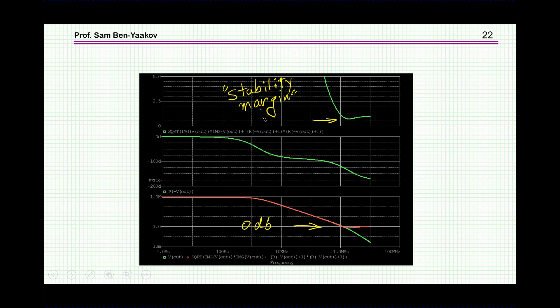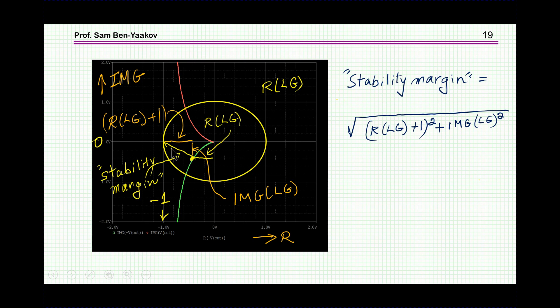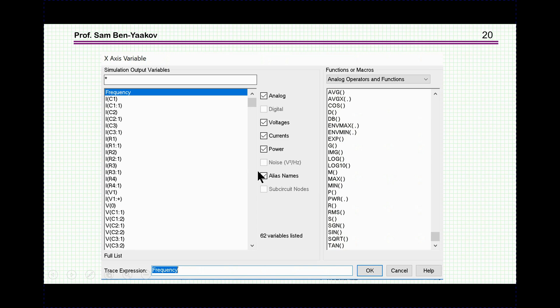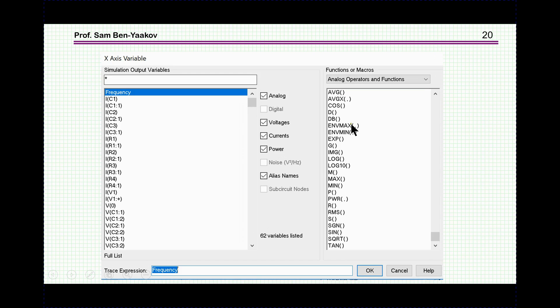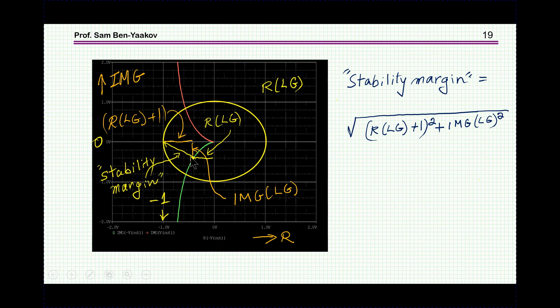So here we have it, this is the original Bode plot, this is the magnitude, this is the phase and this is the stability margin and you see that at this point when we are close to 0 dB we have this minimum value, this is this vector here, this is this point, this vector here and here is it's about 0.6 or 0.7, this is this length here, this is 1 so it makes sense this would be 0.6.